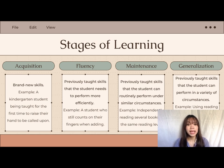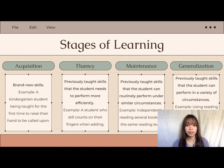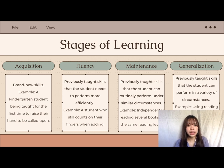The second stage is fluency — previously taught skills that students need to perform more efficiently, such as a student who still counts on their fingers when doing addition. The student can complete the skill accurately but works slowly; the goal is to increase speed. The third stage is maintenance — previously taught skills the student can routinely perform under similar circumstances, such as independently reading several books at the same reading level. Both accuracy and proficiency remain at high levels; the goal is retention.